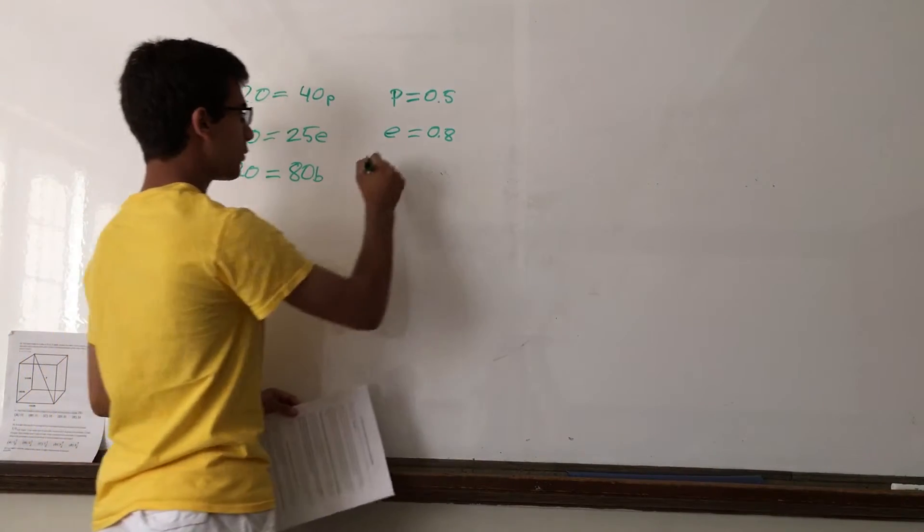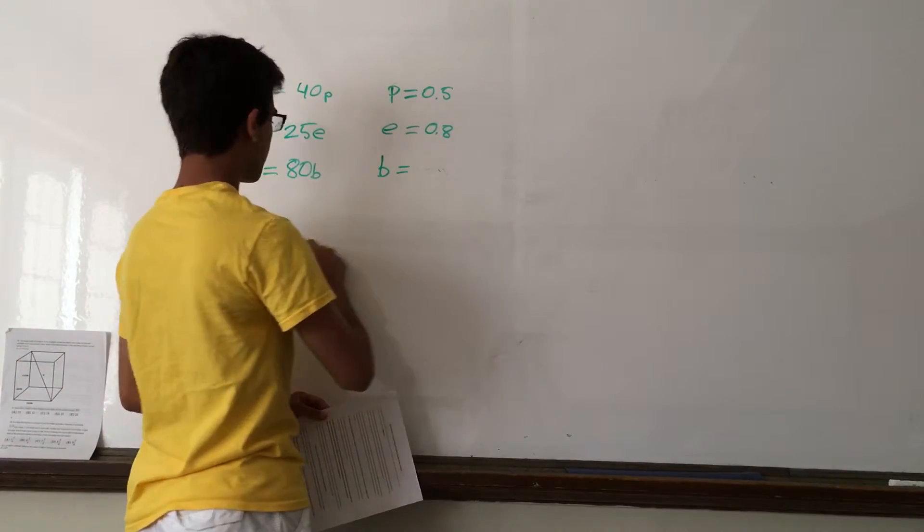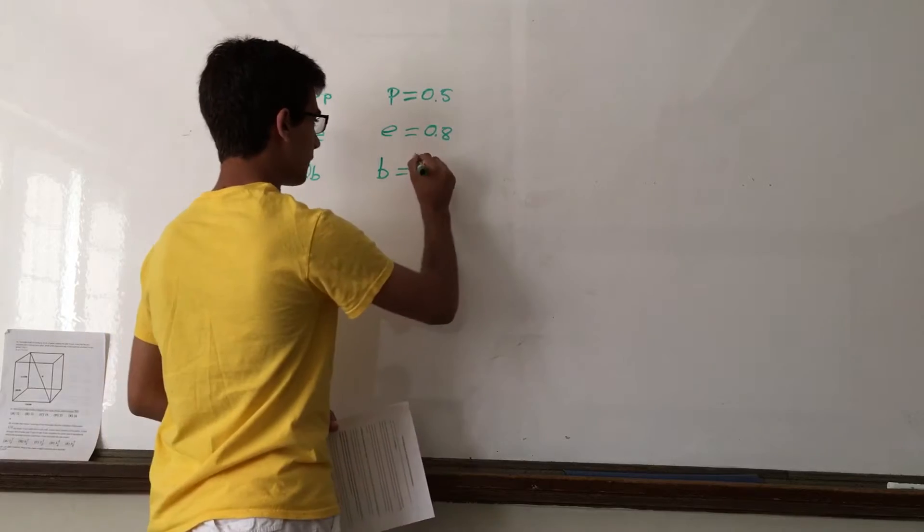And lastly, 20 divided by 80 must equal B. So, the price of a bookmark is 25 cents.